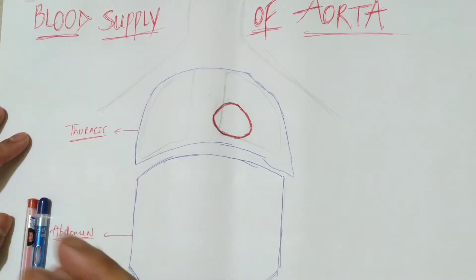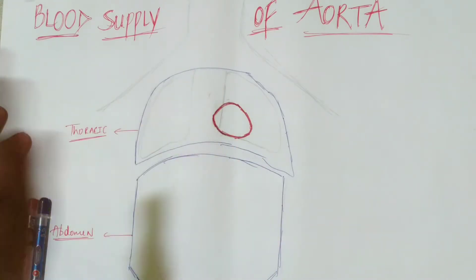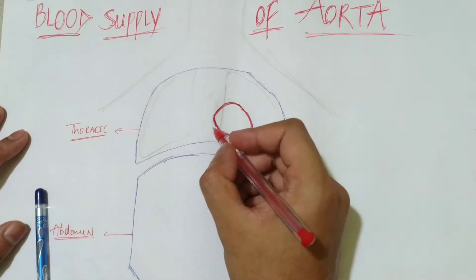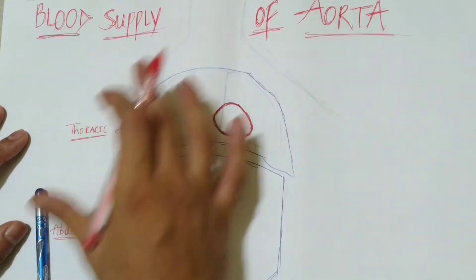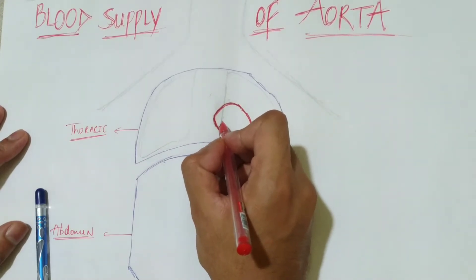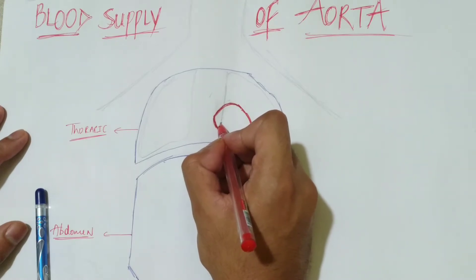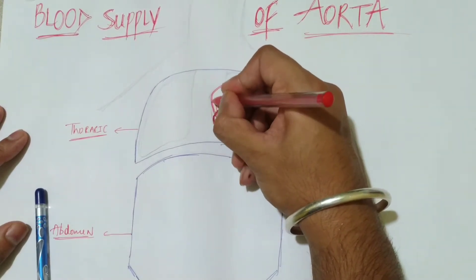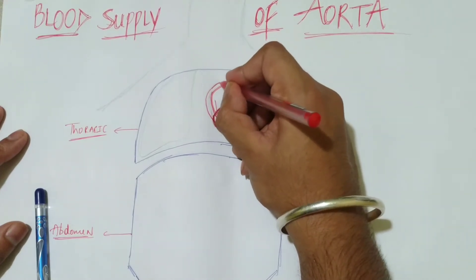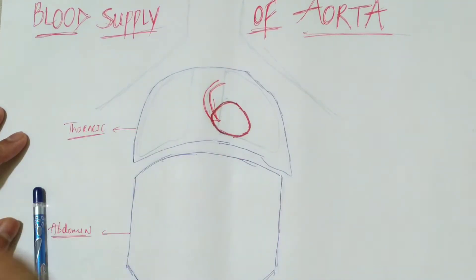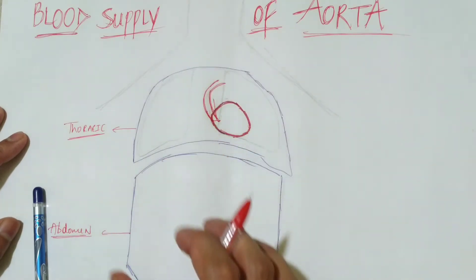Let's see what the main arteries are that supply the upper and lower parts of the body. Starting from the heart, this is the thoracic section overview of our human body, and this is the abdominal part. From the base of the left ventricle, the ascending aorta arises. This is your ascending aorta — it is the widest part of the aorta, about three centimeters wide.